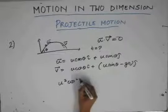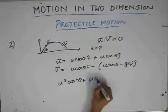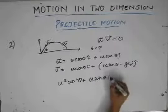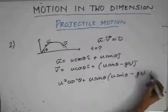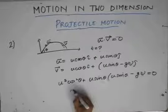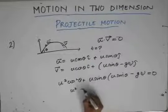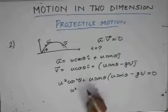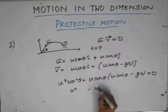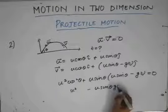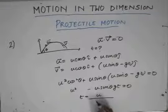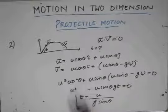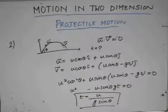The dot product gives u²·cosθ + u·sinθ·(u·sinθ - gt) = 0. Simplifying, u²·cos²θ + u²·sin²θ - u·sinθ·gt = 0, which gives u² - u·g·t·sinθ = 0. Therefore, time t equals u/(g·sinθ). At this instant of time, the two velocity vectors are perpendicular.